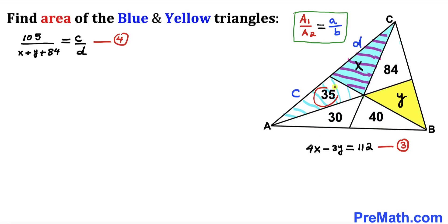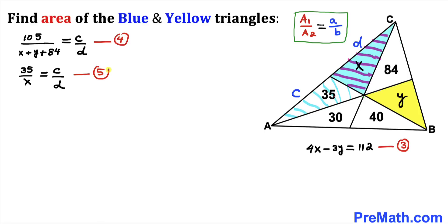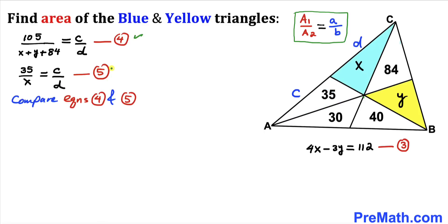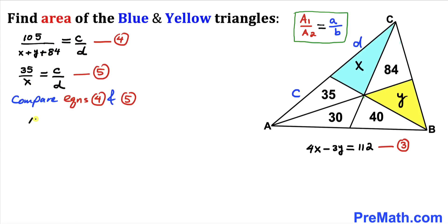Now focusing on two smaller triangles with bases c and d, their ratio gives: 35 / x = c / d. This is equation 5. Comparing equations 4 and 5, the right-hand sides are equal, so we equate the left-hand sides: 105 / (x + y + 84) = 35 / x.